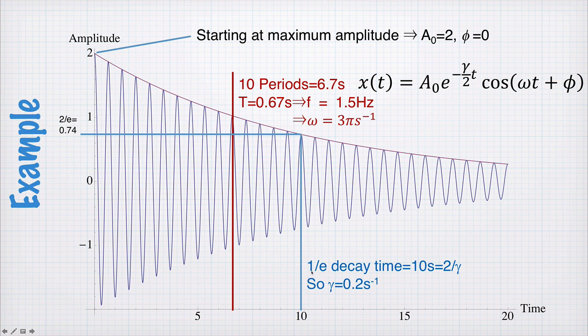So the 1/e decay time is 10 seconds. And the 1/e decay time here must be equal to 2 divided by γ. So γ is 0.2 seconds to the minus 1.